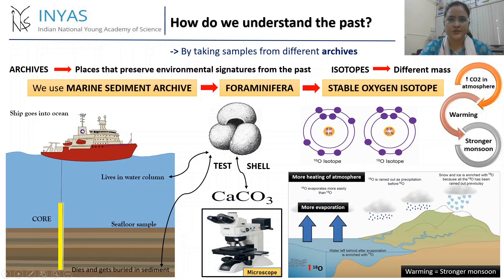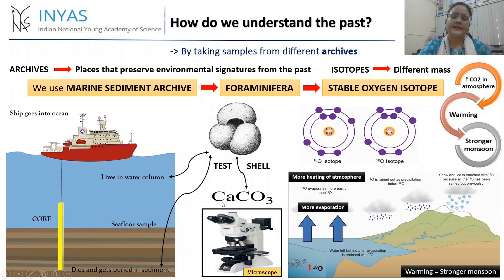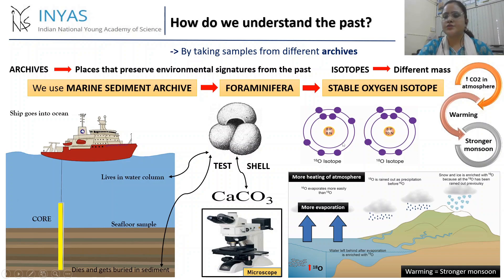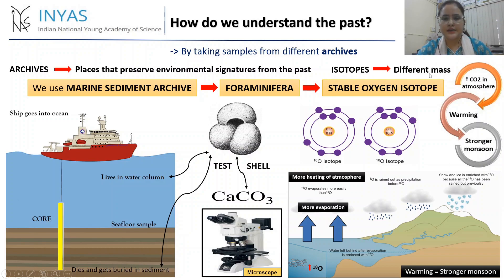It has an exoskeleton, or outer skeleton, which is called a test, which it makes up of calcium carbonate (CaCO3), and it derives this CaCO3 from the ocean water column. So we analyze the oxygen in its shell. Oxygen has two stable isotopes — isotopes are substances of the same element which have different mass.